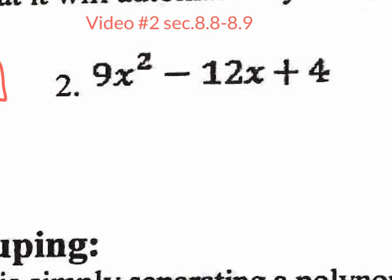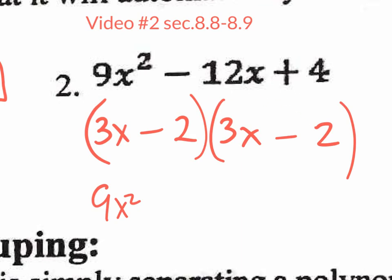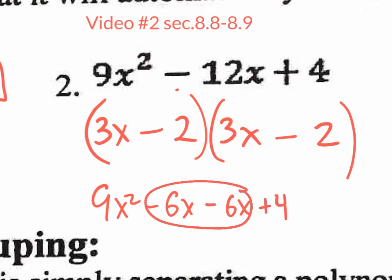How about number 2? By the way, this is section 8.9 — 8.8 is the quadratic binomials, these are quadratic trinomials, but it's all the same concept. The square root of 9x squared is 3x. The square root of 4 is 2. So 3x and 2. Both signs minus and minus. If I distribute: 3x times 3x is 9x squared; 3x times negative 2 is negative 6x; negative 2 times 3x is another negative 6x; negative 2 times negative 2 is positive 4. These really do give me that negative 12, so I know I did it right.